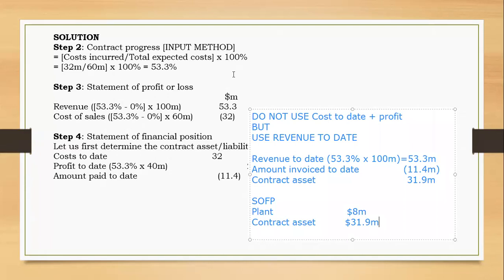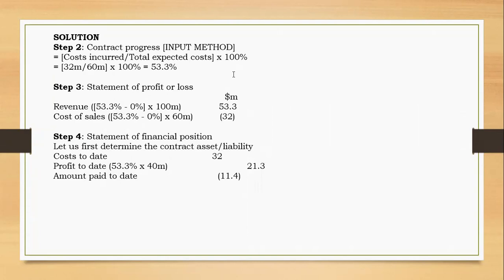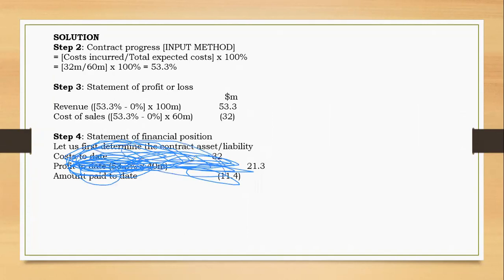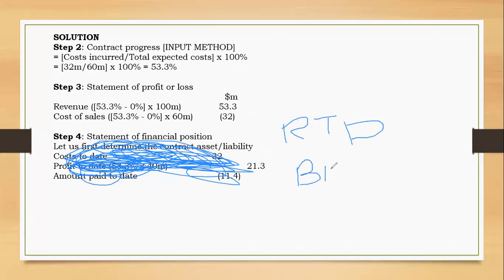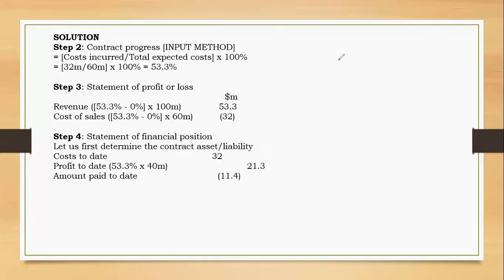To summarize: do not use cost to date plus profit — never use that. Just take revenue to date, which is 53.3 million, and less the amount billed or invoiced to the customer. That gives your contract asset or liability. If you haven't subscribed, please do so for regular updates. Thank you all.